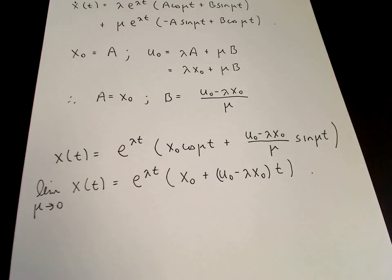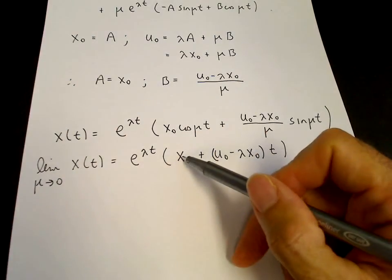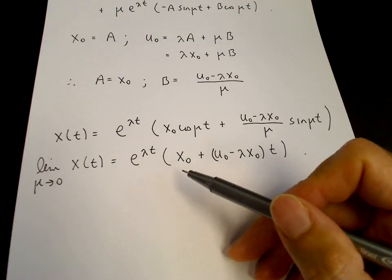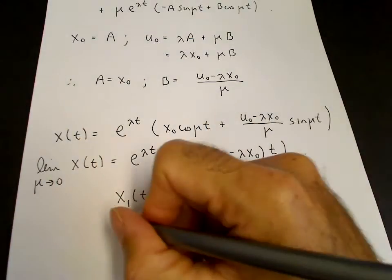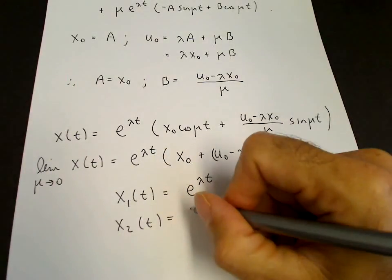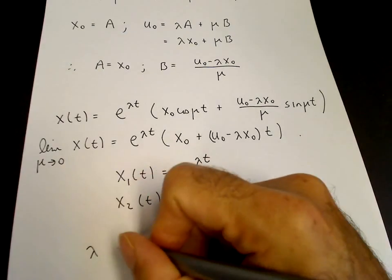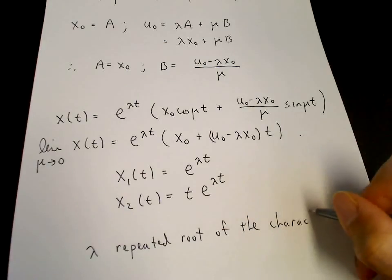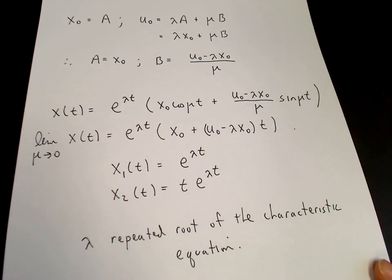This is the solution for the repeated root case when b squared minus 4ac equals 0. The key result is that the general solution has the form: a constant times e to the lambda-t, plus another constant times t times e to the lambda-t. So our first solution is e to the lambda-t, and our second solution is t times e to the lambda-t, where lambda is the repeated root of the characteristic equation. We then form a linear superposition of x1 and x2.